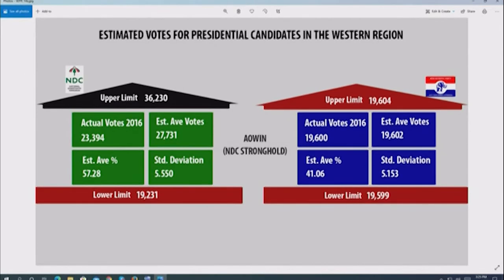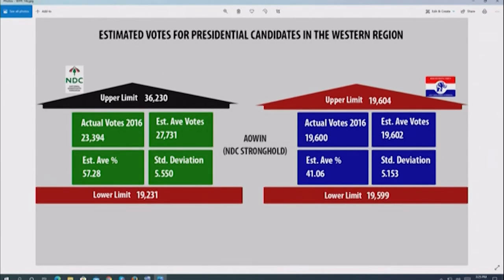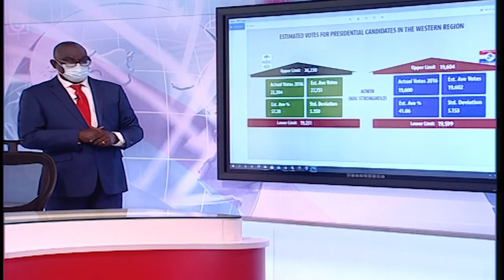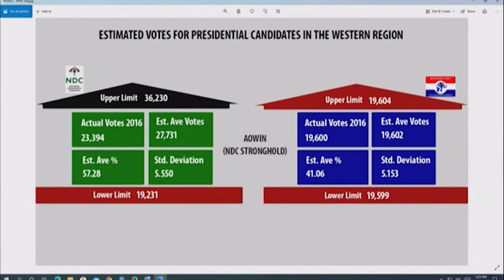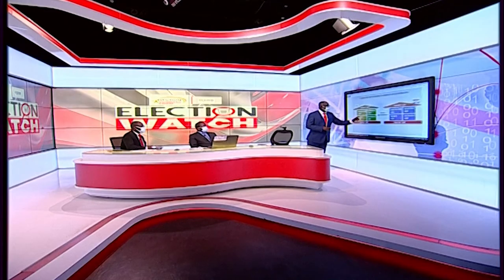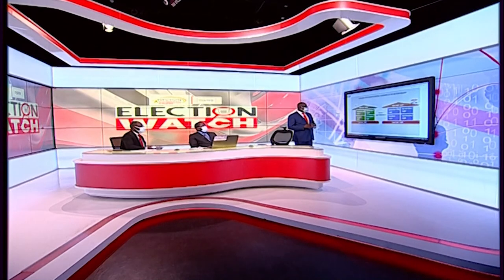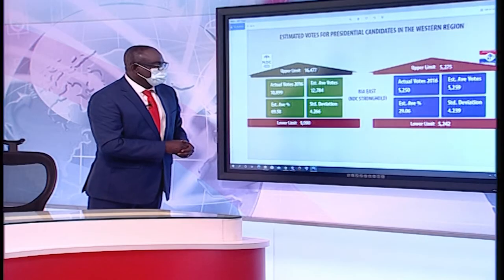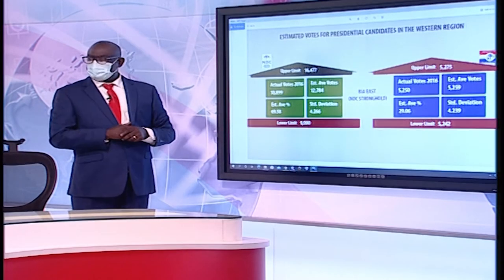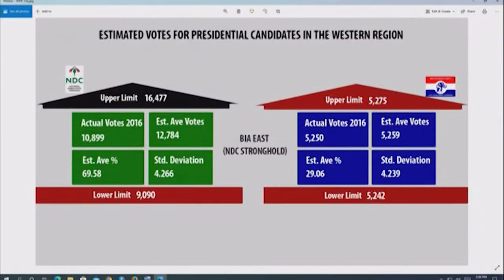NPP nearly maintained their average of 19,602, beating it by just two votes. In Bia East, another NDC stronghold, NDC's estimated votes were 12,784, but they gained only 10,899 — dropping votes. NPP almost maintained their average of 5,259, actually getting 5,250. The trend points clearly to the fact that NPP in its own strongholds performs well above its average, while in NDC strongholds it maintains or slightly exceeds its average.